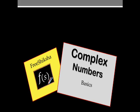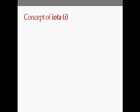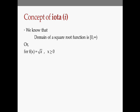Hello friends and welcome to another lecture by Frishiksha. Today we will discuss complex numbers and the basic concepts of this topic. Let's start with understanding the concept of IOTA. We know that the domain of a square root function goes from 0 to infinity — if you have a function f equal to the square root of x, it is valid for all x greater than or equal to 0.